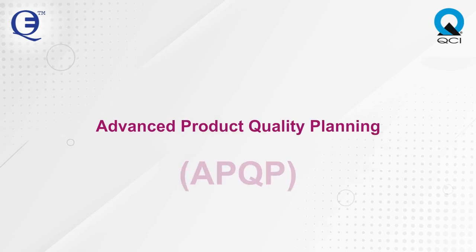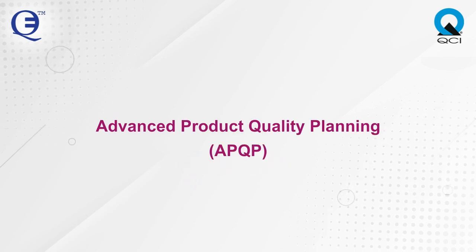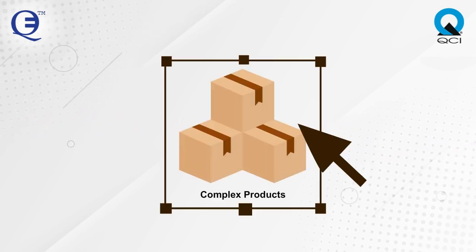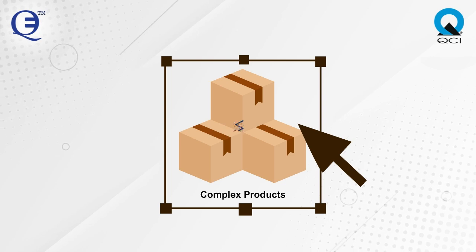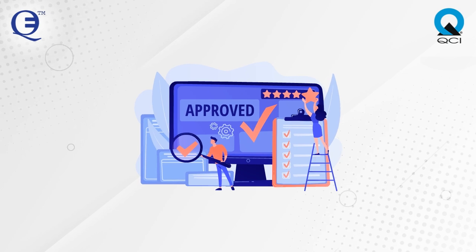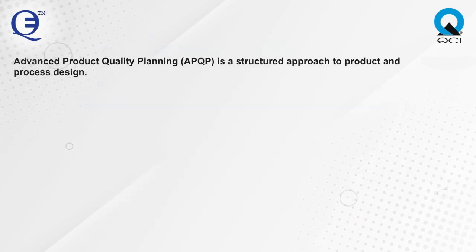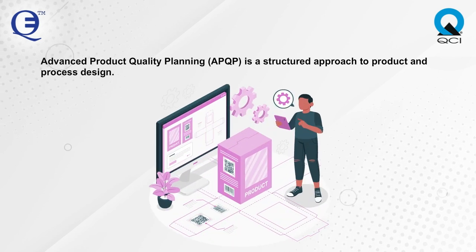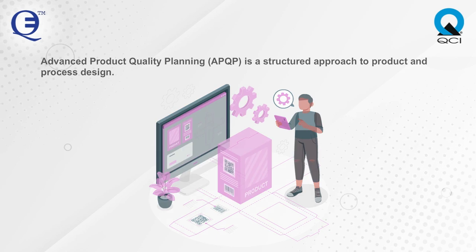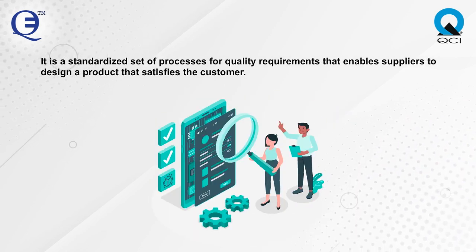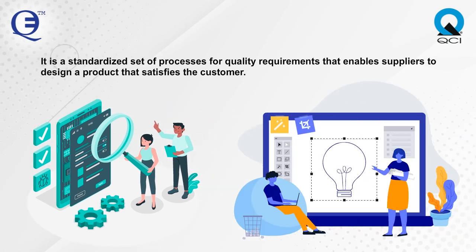Advanced Product Quality Planning, APQP. With innovation, more complex products are designed with reduced new product development times within complicated supply chains to satisfy the increasing customer and quality requirements. APQP is a structured approach to product and process design. It is a standardized set of processes for quality requirements that enables suppliers to design a product that satisfies the customer.